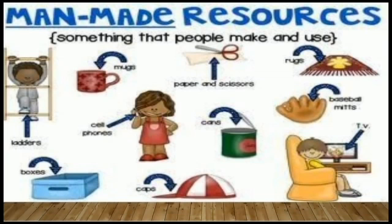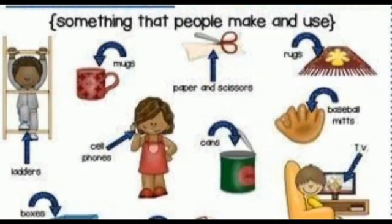We see many man-made materials in our day-to-day life. We need many different things in our day-to-day life. These things are obtained through different types of processes. To satisfy our needs, these processes are done and various things are manufactured.